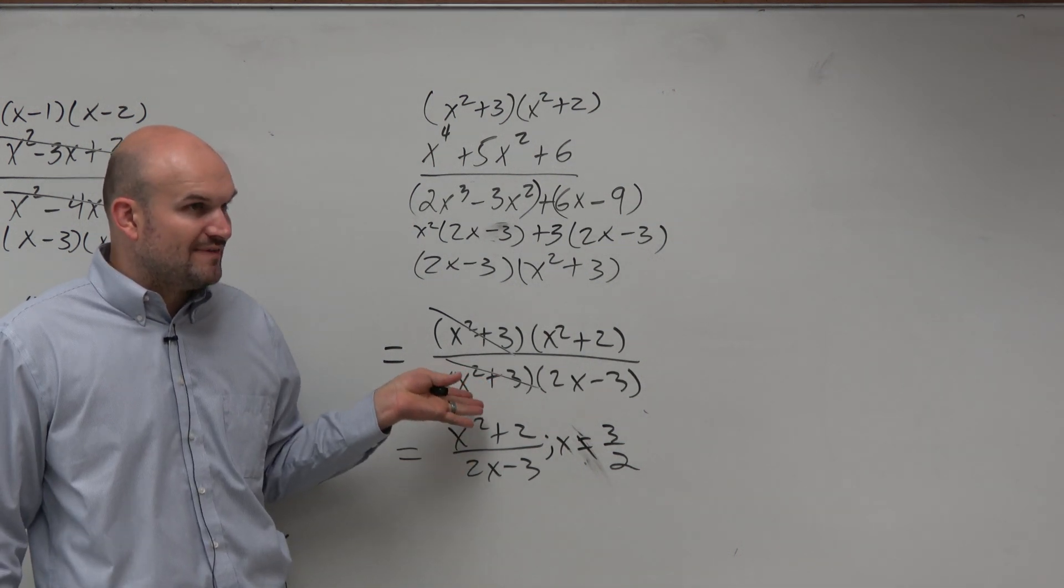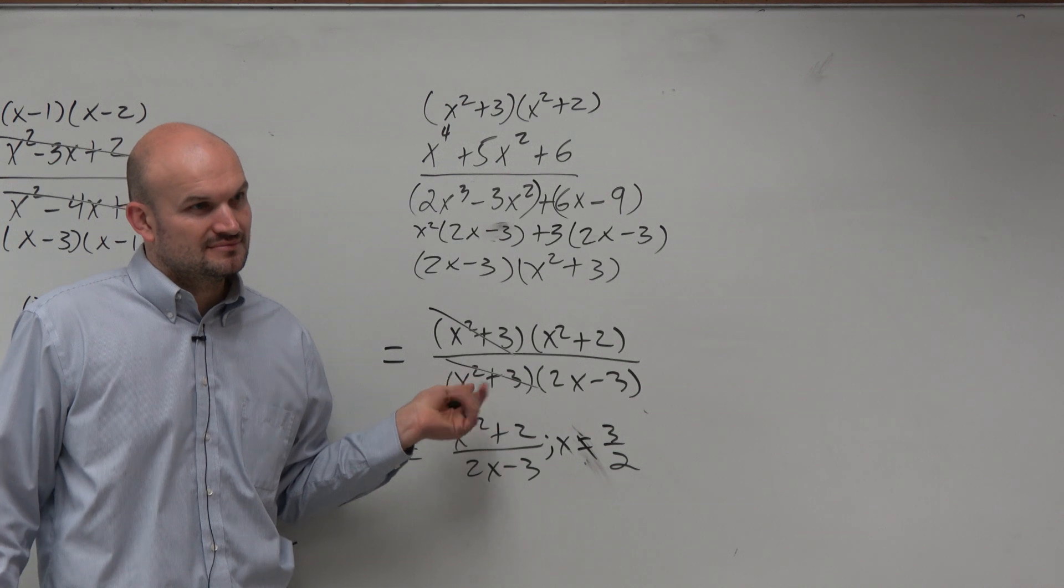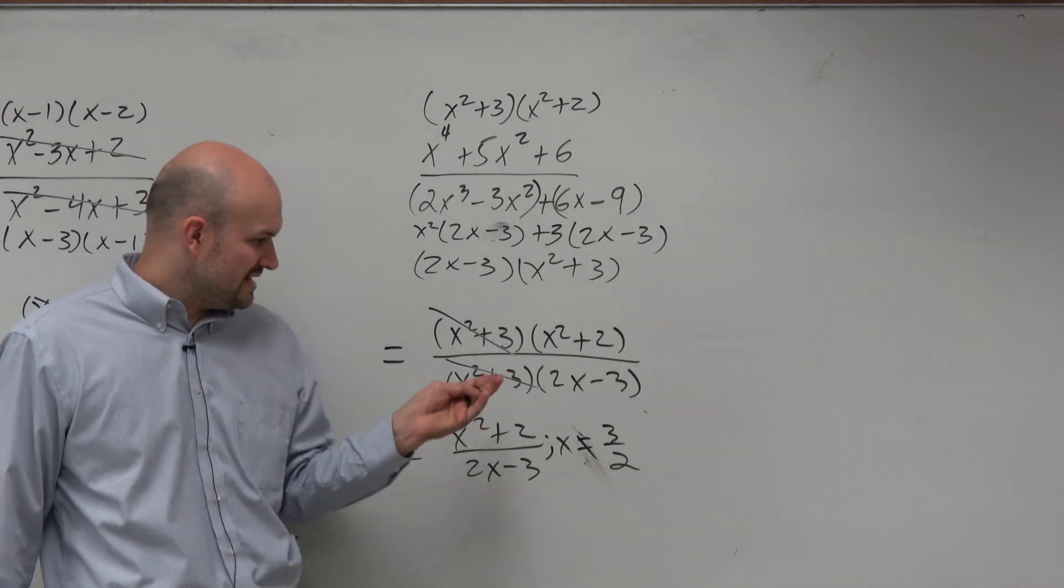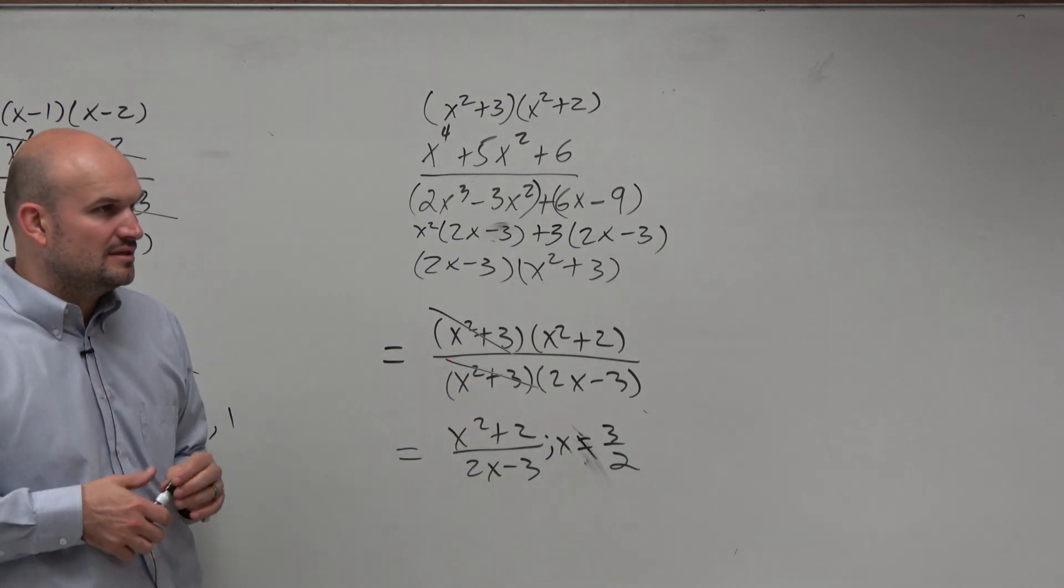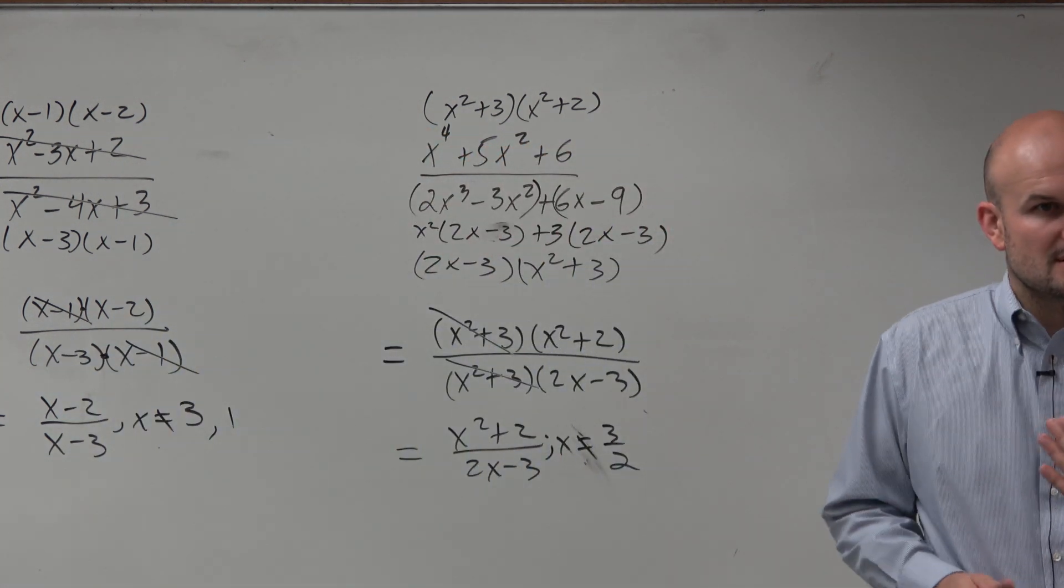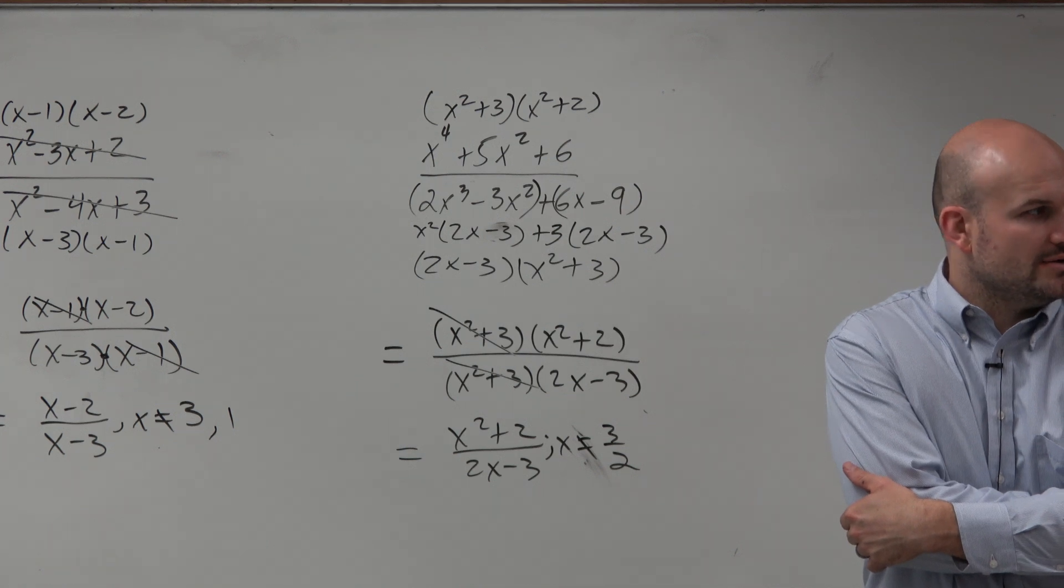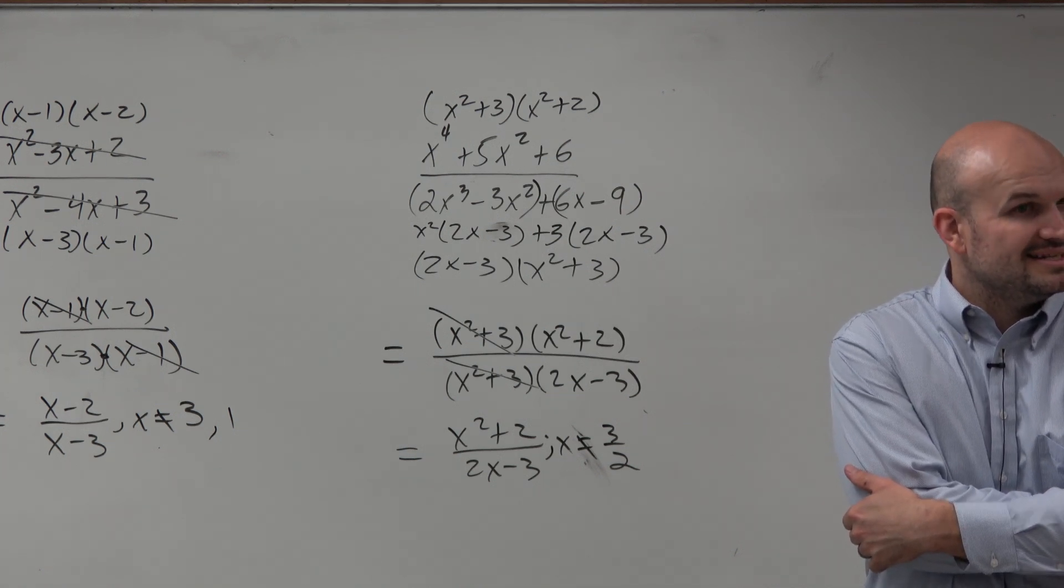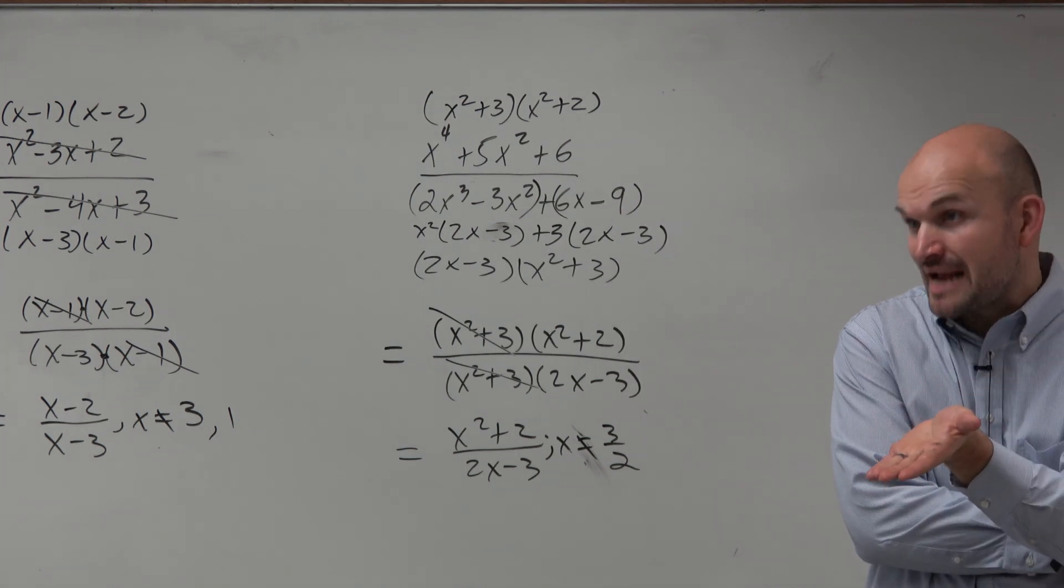What about this? What values make this 0? Can you guys do it in your head yet? What would it be? Set x squared plus 3 equal to 0. You'd have to subtract the 3, introduce the square root. So you have x equals plus or minus the square root of negative 3, which produces 3i.